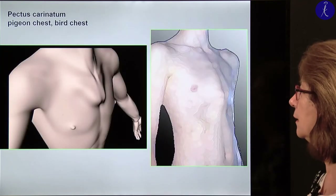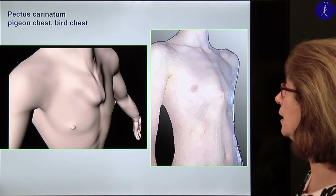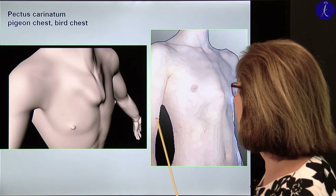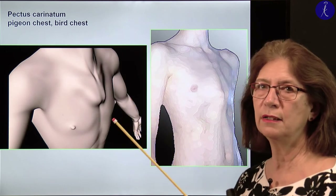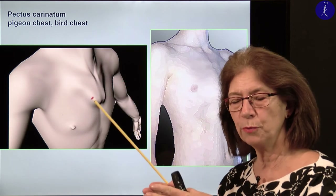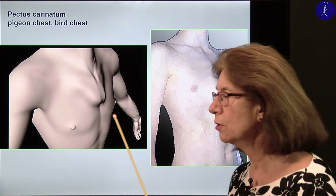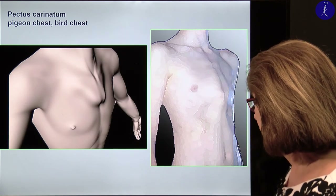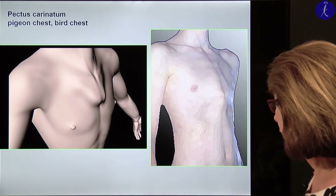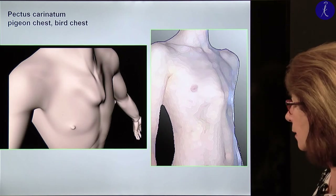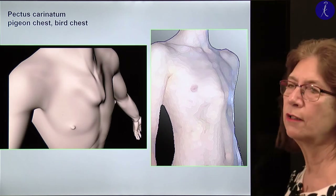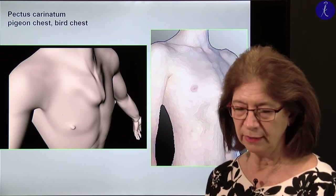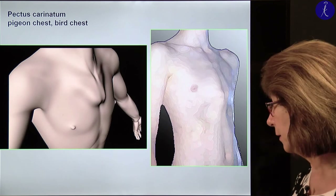The opposite malformation is pectus carinatum — the pigeon chest or bird chest. In this case it's not an indentation but it points anteriorly, from the uniting of the two territories from which the sternum forms. This is usually a lesser physiological problem, but it may also cause breathing and circulatory problems.